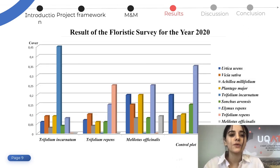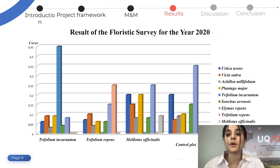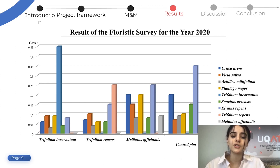Looking now at the results for the year 2020 specifically, the Trifolium incarnatum had an enormous abundance compared to the other intercropping species. At the level of weeds, it is more pronounced at the level of the control plot treatment, where many weeds were identified.